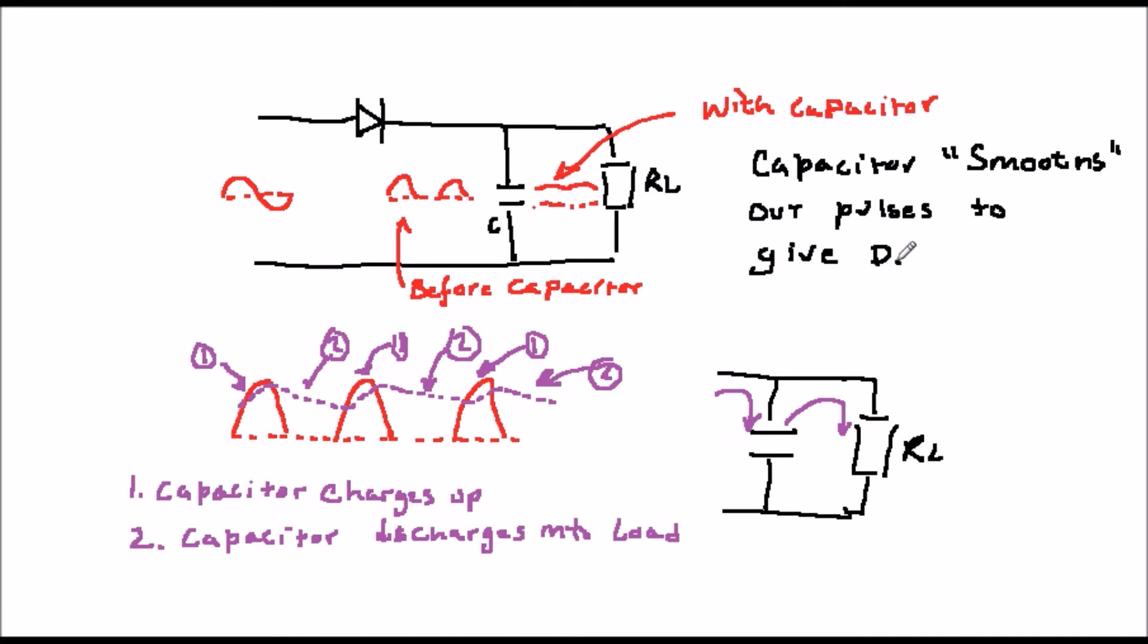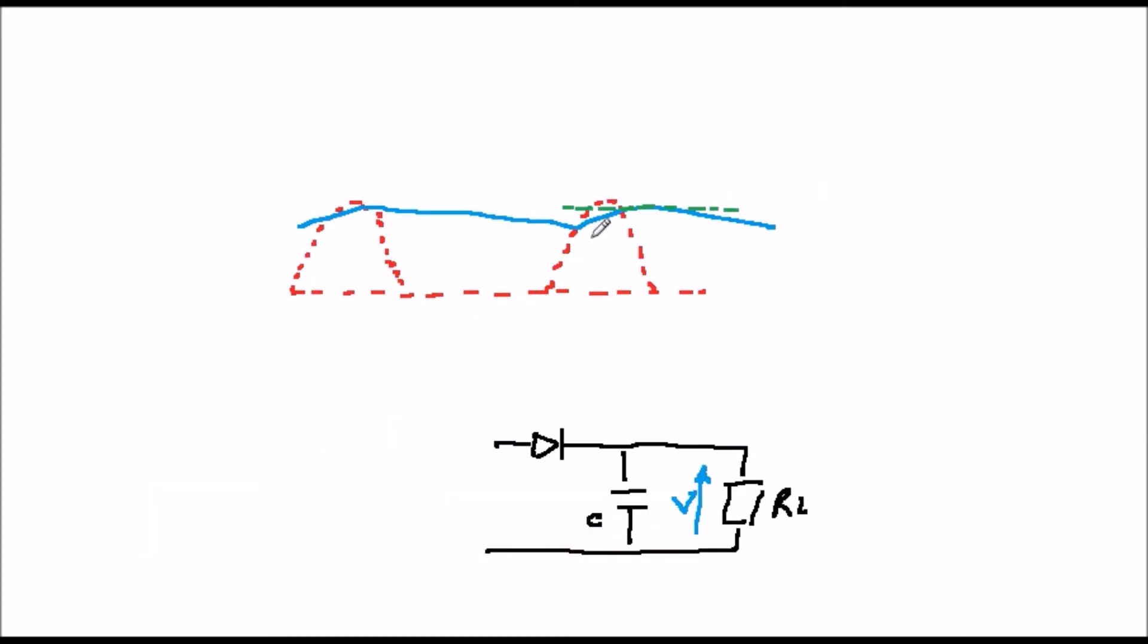You can work out a suitable capacitor value from first principles, but a simple formula which has been derived from this is that the value of the capacitor is equal to the load current divided by Vr times F, where Vr is the ripple voltage and F is the frequency.